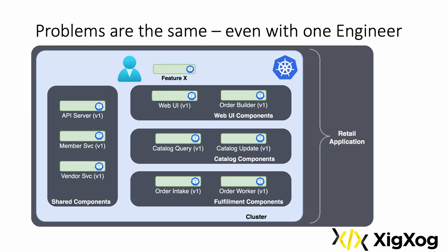Even enabling a single engineer to rapidly innovate is difficult. What we really want is for the teams to each function as if they were the only team working on the app. They'd be able to quickly and easily prototype and test various versions without any overhead. And ideally, we'd be able to extend those benefits to individual engineers within those teams. The reality is that the use of namespaces requires significant DevOps involvement.